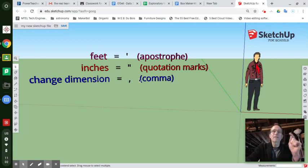So your change in dimension is the comma. The comma looks like an apostrophe in case you never noticed, but it's actually lower on the keyboard. It's right above the space bar. So it's lower because it actually rests lower on the line that you're typing. So feet equals apostrophe, inches equals quotation marks, and changing dimensions is a comma. So here's the comma.